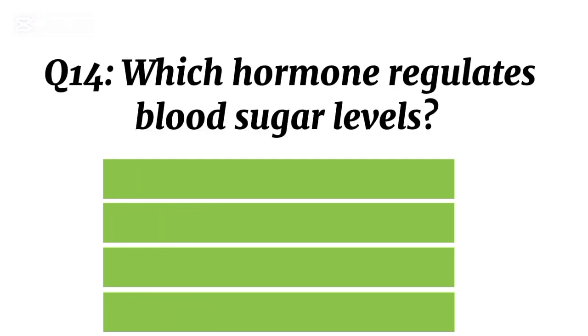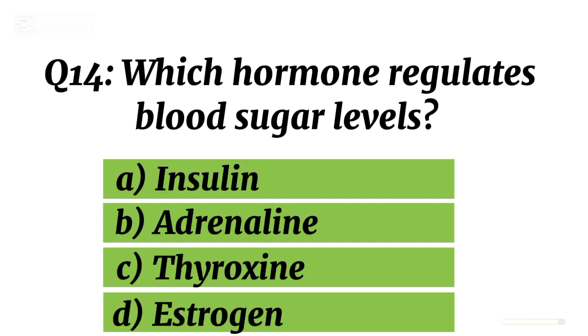Question 14. Which hormone regulates blood sugar levels? Correct option A. Insulin.